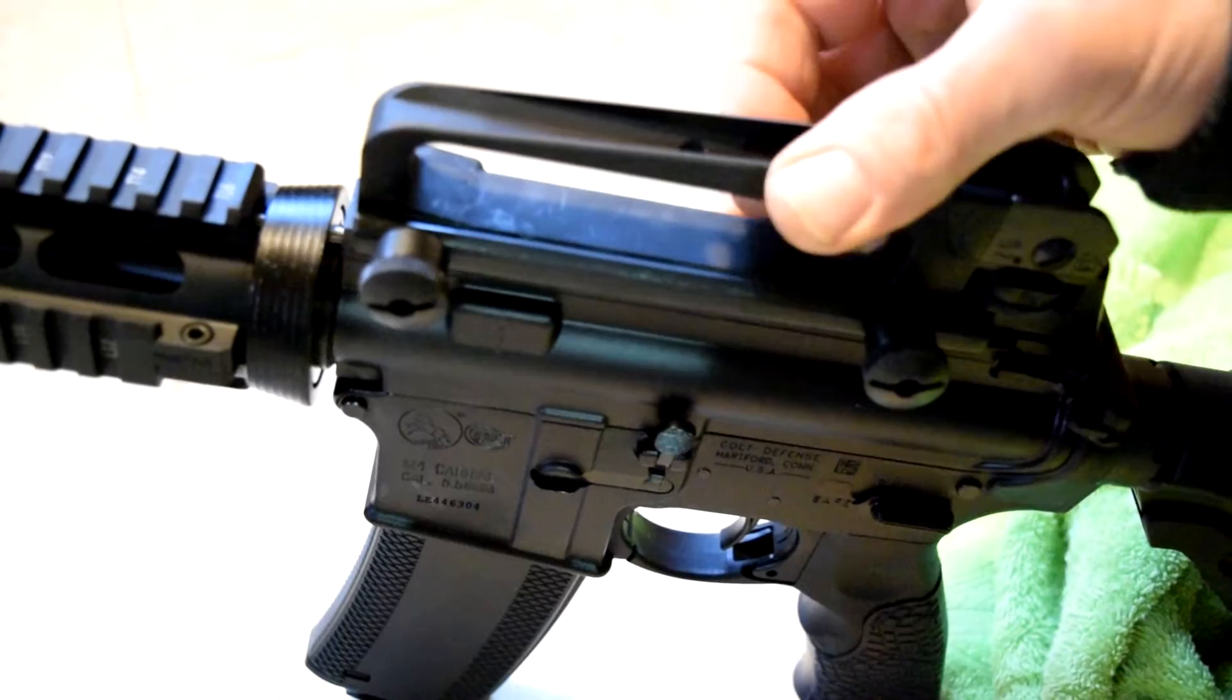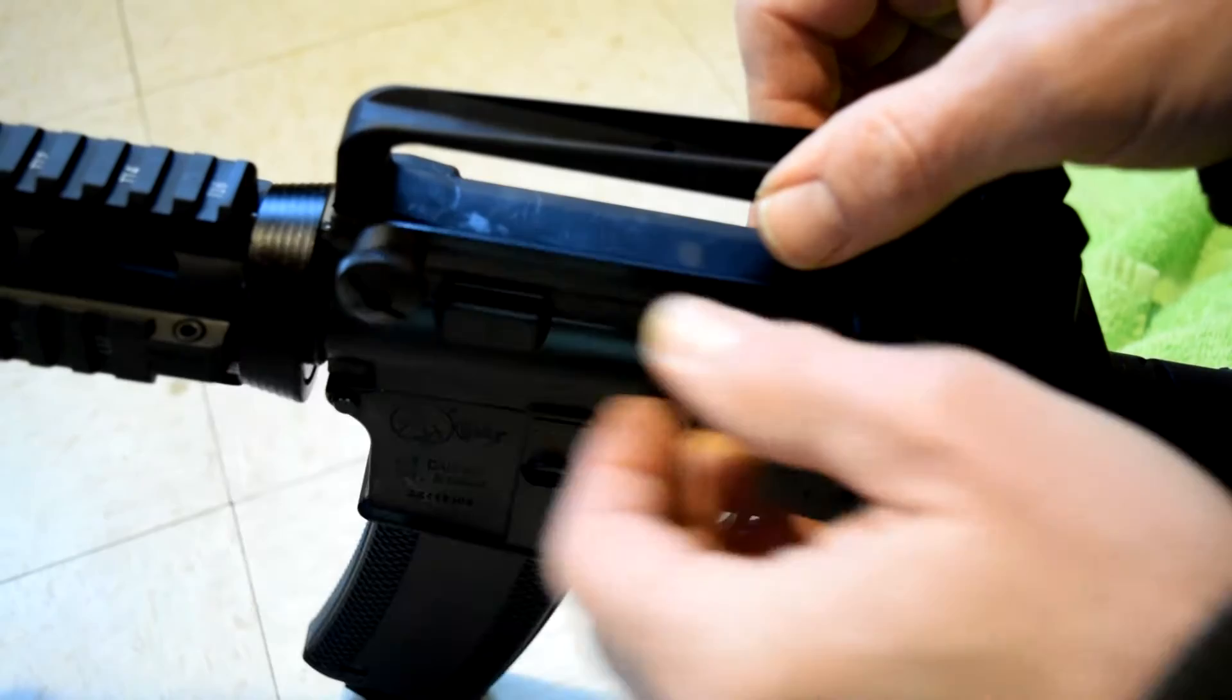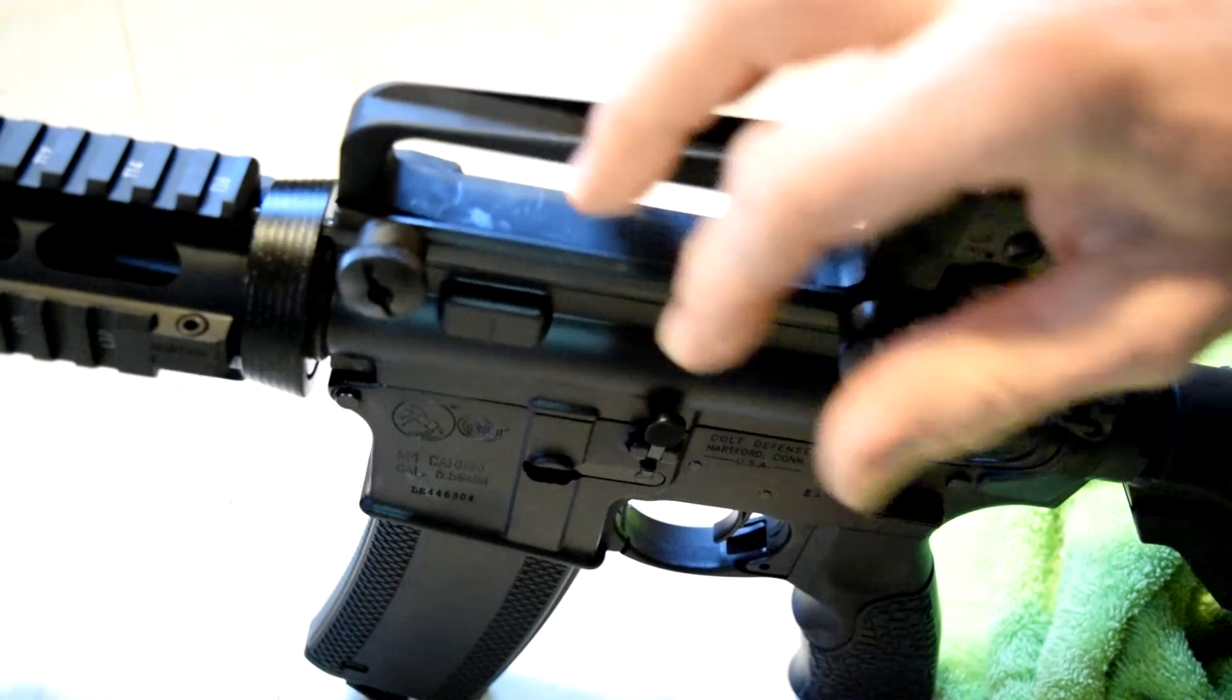Just hook it on there and slide it forward. Then hold it there and tighten the thumb screws up while putting pressure forward on it. Then you can tighten them snug with a screwdriver or torque wrench to about 5 foot pounds.